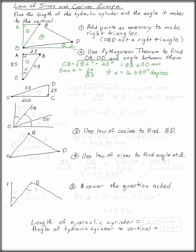Now, let's move on to triangle number 3, ODC. Again, we can use the Pythagorean theorem to find OD. OD is the square root of the two legs, which are 225 squared and 25 squared, which is 226.38 millimeters.